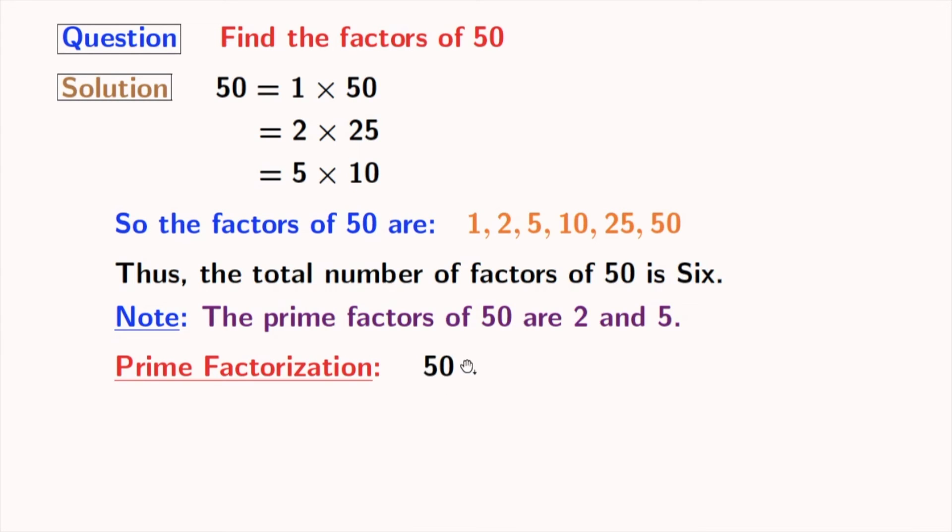Firstly, have a look at 50, which is an even number. So, we can express it as 2 times 25. Now, 25 has unit digit 5. So, we can write it as 5 times 5.